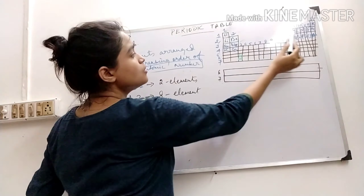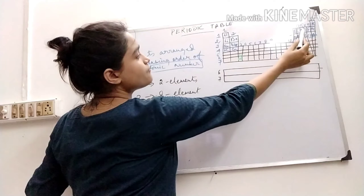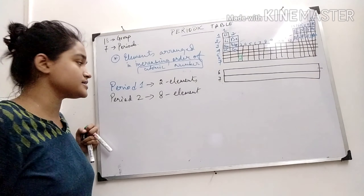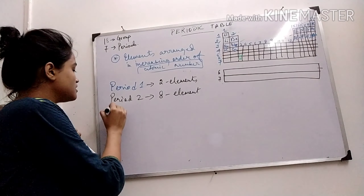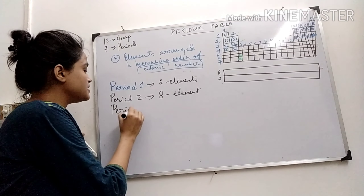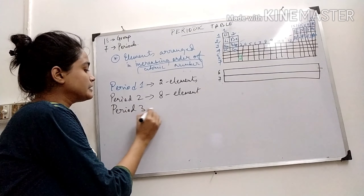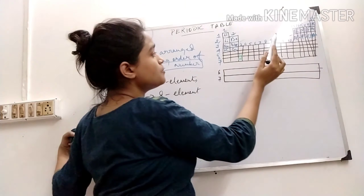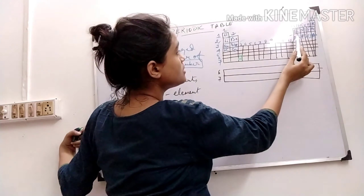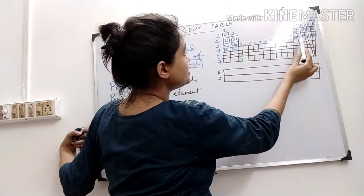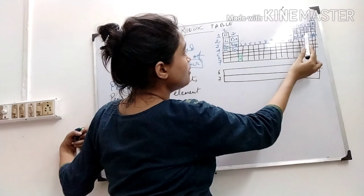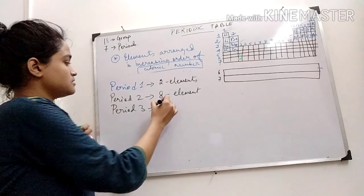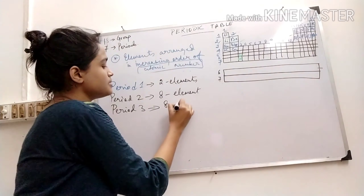Counting 1 through 8 — 8 elements are present, so this is a small period. Period 3 also contains 8 elements — 1, 2, 3, 4, 5, 6, 7, 8. So, 8 elements; period 3 is also a small period.